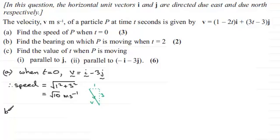Okay so moving on to part B. Find the bearing on which p is moving when t equals 2. So let's see what we get when t equals 2. What's v going to be? Well v will equal 1 minus 4 here which will give us negative 3, negative 3 in the i direction. And when t equals 2 here we'll have 6 minus 3 which is 3 plus 3j.